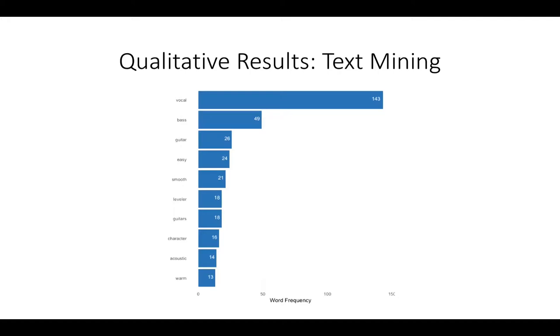This was interesting - the descriptor smooth came up. Then we've got character, acoustic, which I guess is going with guitars as well - acoustic guitars. And then warm. So we can see here that these are the two descriptors that come out. The sources are the vocals and the bass guitar, and the two descriptors that we can pull out here are smooth and warm. They seem to be the two descriptors that people are using for that piece of equipment.